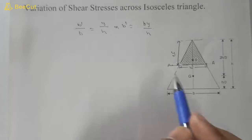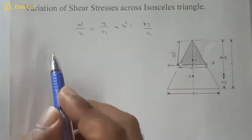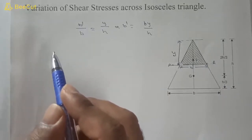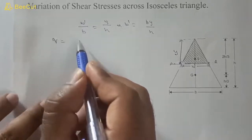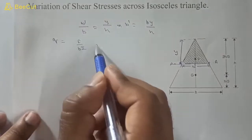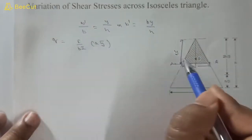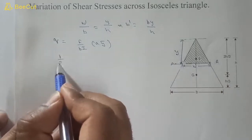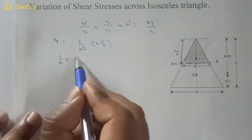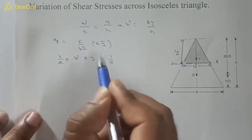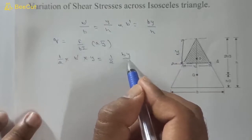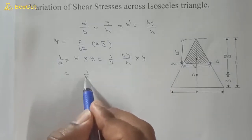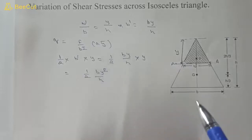Now that we have b_dash, the formula for shear stress variation across the section is: shear stress q = F / (b * I) * A * y_bar, where A is the area above the cross section. The area of the triangular portion above the section is: A = (1/2) * b_dash * y = (1/2) * (by/h) * y = by²/(2h).